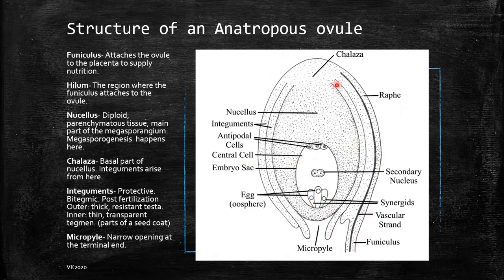This anatropous ovule is bitegmic. Why? Because it shows two integuments — the outer and the inner. Hence it is known as 'bi' — bi meaning two, tegmic meaning integuments.